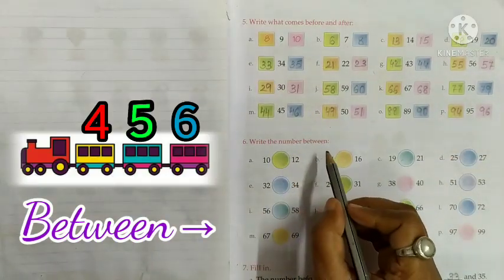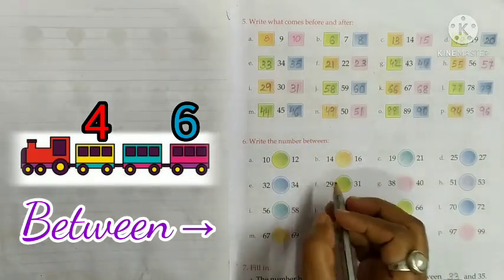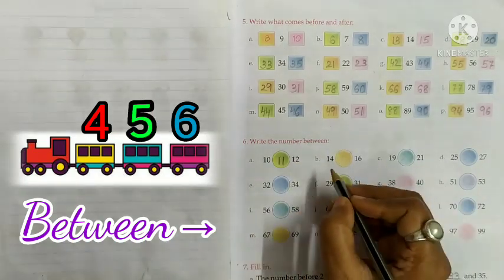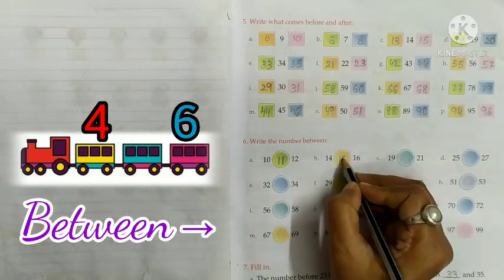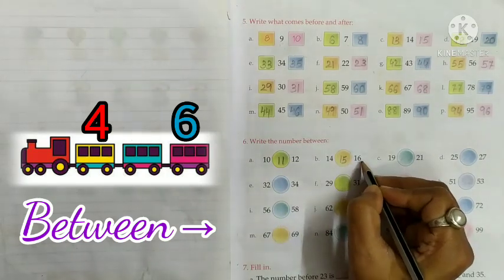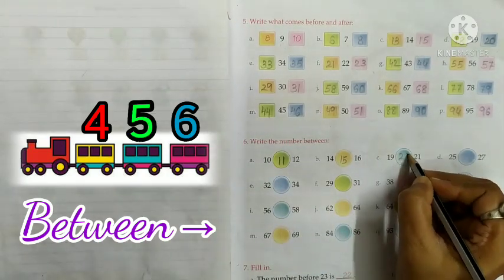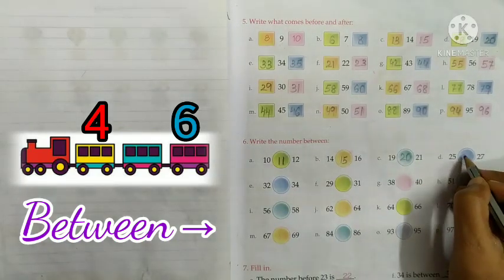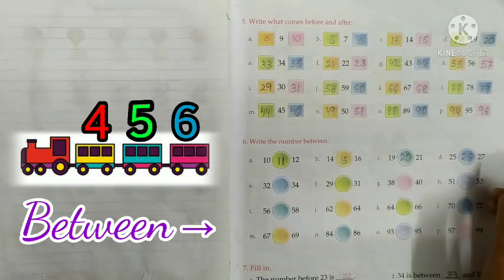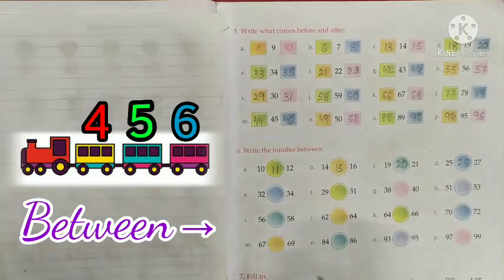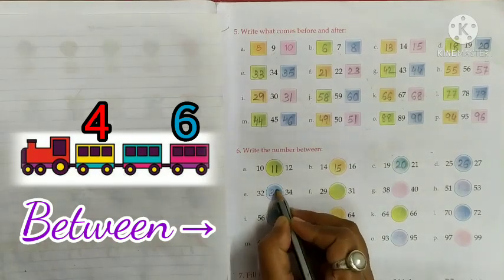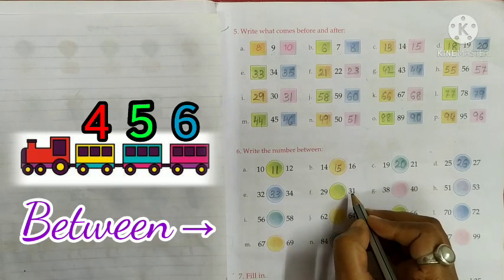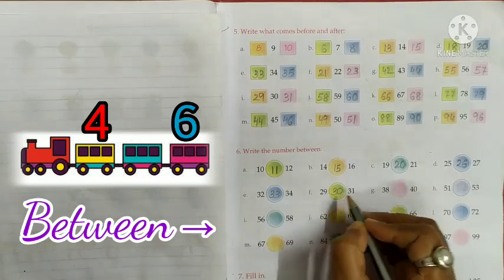Write the number between. Here, the numbers are 10 and 12: 11 is between 10 and 12. Next, 14 and 16: 15 is between 14 and 16. Next, 19 and 21: 20 is between 19 and 21. Next, 25 and 27: 26 is between 25 and 27. Next, 32 and 34: 33 is between 32 and 34. Next, 29 and 31: 30 is between 29 and 31.